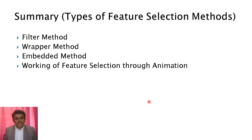Finally, in this session I have discussed different types of feature selection methods — filter method, wrapper method, and embedded method. I have also shown the working of feature selection through animation. I hope this video will help you understand the working of different types of feature selection methods. You have to choose the right type of feature selection in order to select a subset of features. Thank you very much for watching this video. For more videos, please stay tuned.